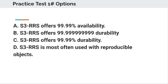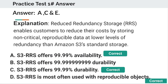Please select your answer in the next 5 seconds. So the right answer is option A, C, and D. Because the truth about S3 RRS — Reduced Redundancy Storage — enables customers to reduce their costs by storing non-critical, reproducible data at lower levels of redundancy than Amazon S3 standard storage.